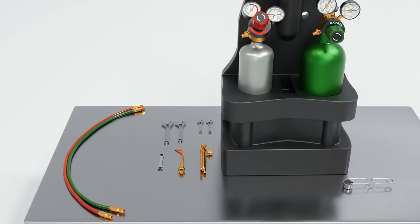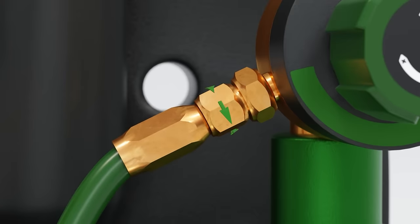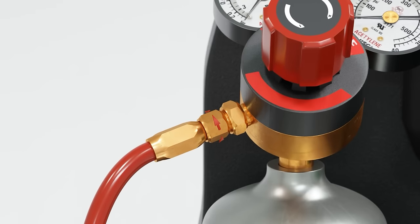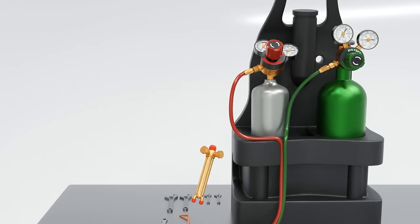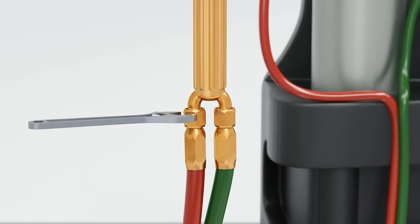Next, connect your hoses to the regulators. In this case, the oxygen is clockwise to tighten. Whereas the acetylene is counterclockwise to tighten the hoses to both the regulator and the torch handle assembly. Use a wrench to tighten them to snug.